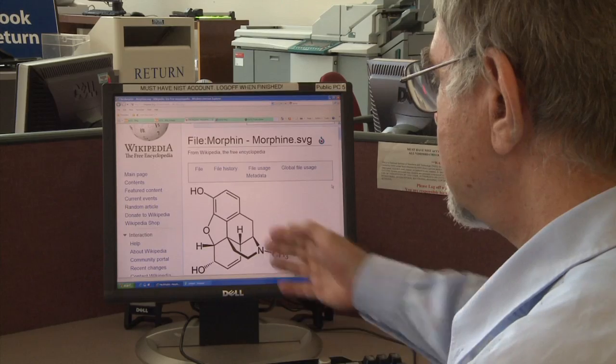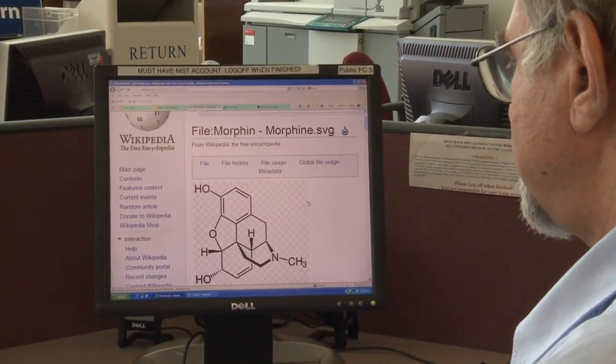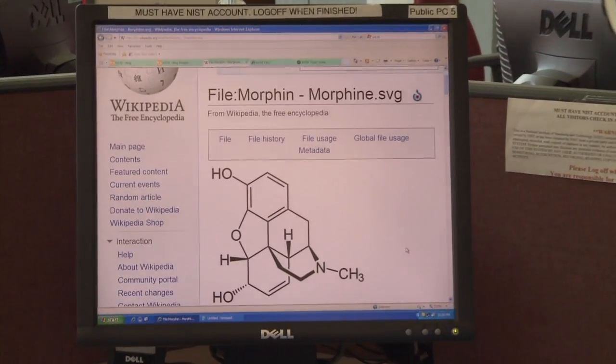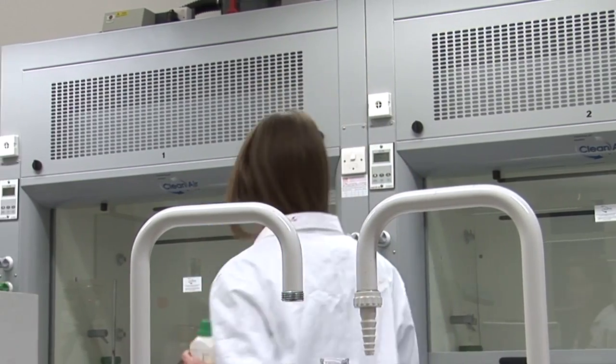This is chemical structure of a well-known substance called morphine. And this is how a chemist would draw a chemical structure of it. I think we need a chemist at this point. White coat, chemicals, she looks the part.